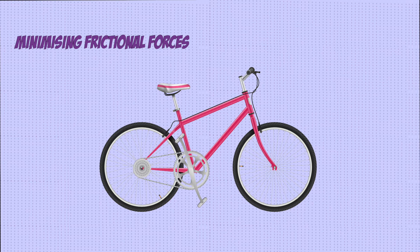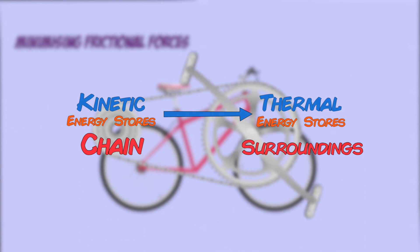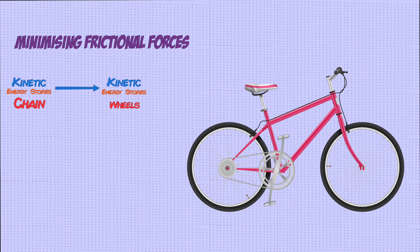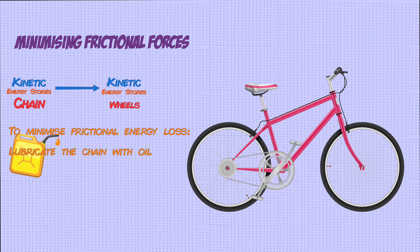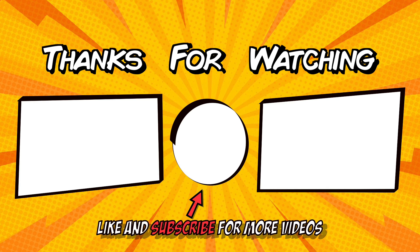Another way to reduce unwanted energy changes is by minimizing frictional forces in moving objects. Consider a bicycle — the chain moves over sprockets when ridden, and this movement leads to friction between the chain links and the sprockets, causing some of the kinetic energy to be converted into thermal energy instead of being transferred usefully to the kinetic energy stores of the wheels. To minimize this energy loss, you can lubricate the chain with oil, reducing friction and allowing smoother movement over the sprockets.